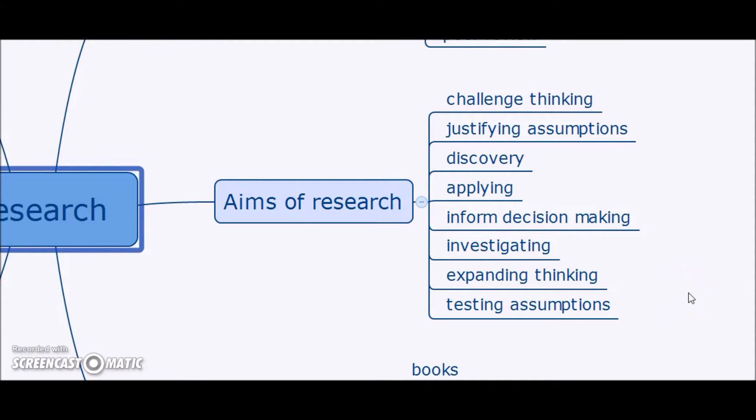So the things that came up in the other mind maps that were done in the classes were things like challenging thinking, justifying assumptions, discovery, applying, informing decision making, investigating, expanding thinking, testing assumptions, and so on. And so we can see there's a whole different set of ranges of aims of research where we might have different ideas. So we might be wanting to find out something new, or we might want to be addressing something that we already believe or think we disagree with, or we might want to be finding out something that will help us in the future to guide us to new decisions and further research that we might do. So we can see that there are many different aims of research.